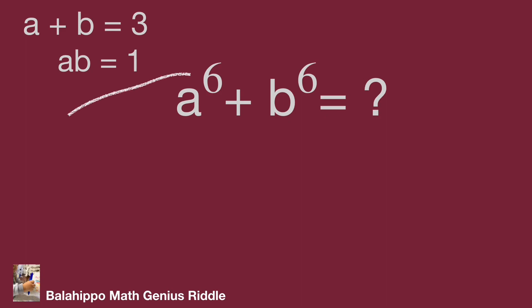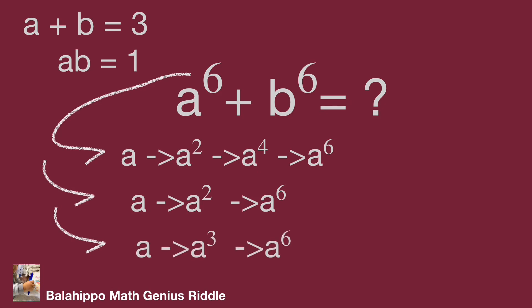How should we get a power of 6? There are several approaches. We may square a to become a squared and square a squared to get a to the power of 4, then times a squared to finally get a power of 6. Or square a to become a squared, then cube a squared to become a power of 6. Another approach: cube a to become a cubed, then square a cubed to get a power of 6.